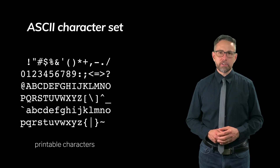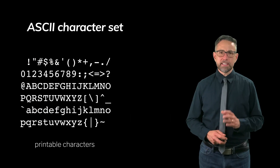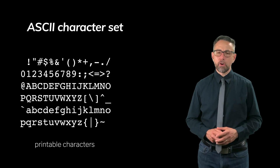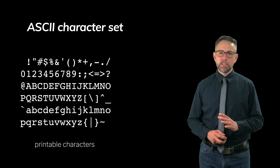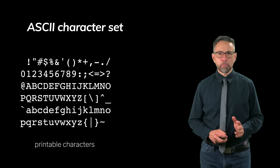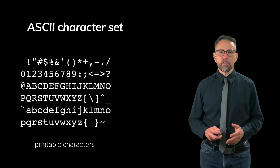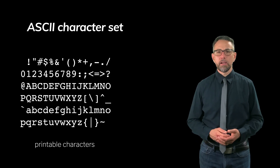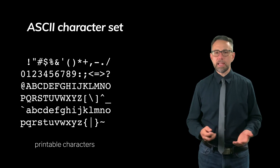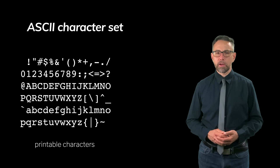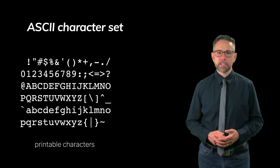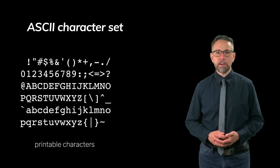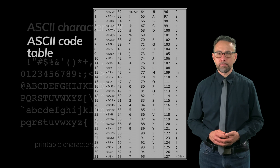Here's the ASCII character set — the set of characters that can be represented using ASCII encoding. These are the printable subset; there are a few characters without a printable version, like space. You can see they're missing almost every international character you can imagine.